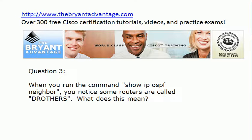A router that's called a DR Other in OSPF means that for that particular segment, that router is neither the DR nor the BDR. Let's say on a broadcast segment you have three or four routers. We're going to have one DR, we're going to have one BDR, and the other two would be DR Others.